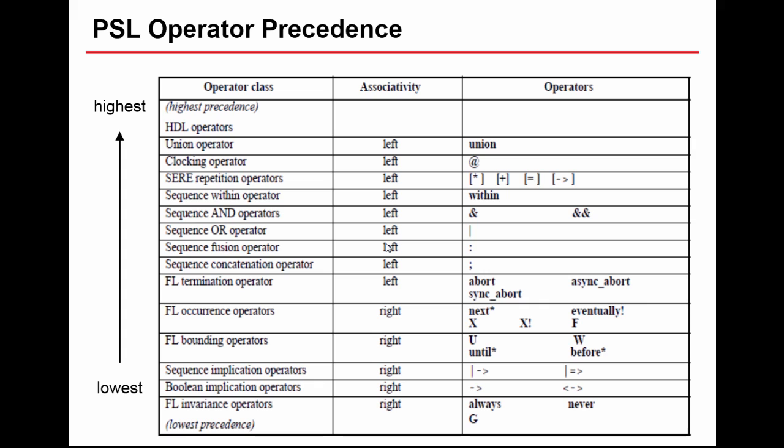If you look in the language reference manual of any language you'll find a table that looks like this. It lists the operators in the language starting from at the top highest precedence down to lowest precedence and it will also specify for each operator which associativity left or right.